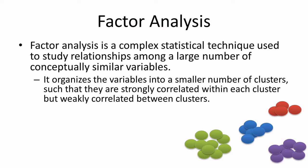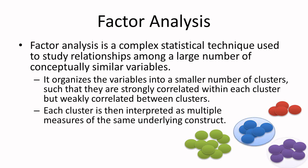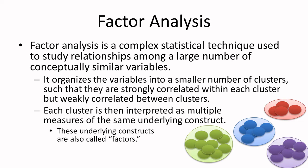In this example, we've measured all these different variables and found that some tend to be more related to each other than others. Based on these relationships we can start to get a sense that maybe there are at least four different things going on in this data — four separate constructs we seem to be measuring. Exactly what those constructs are isn't always very clear, but there do seem to be at least four separate constructs. Those underlying constructs are what we call the factors.